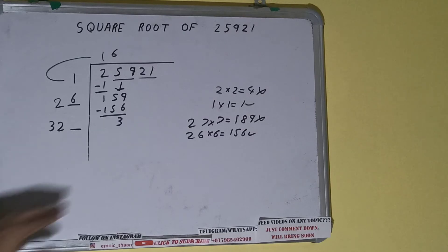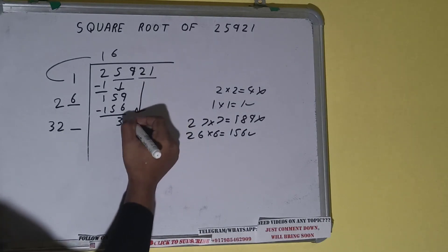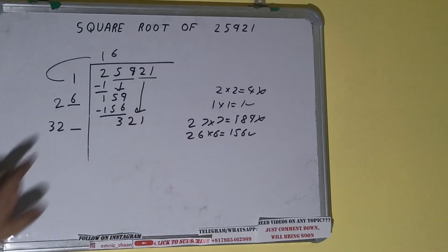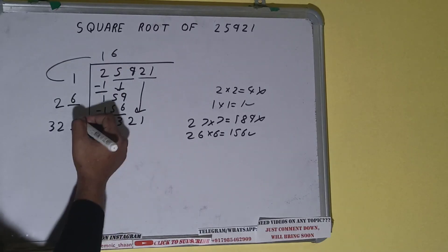And this number we need to make it big. So bring the next pair down and it will become 321. Now whatever number we write here, we have to write here also.